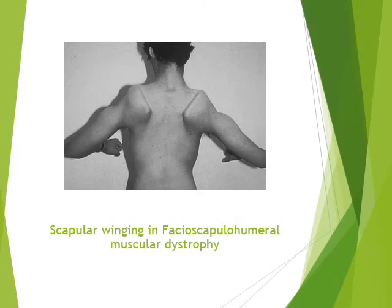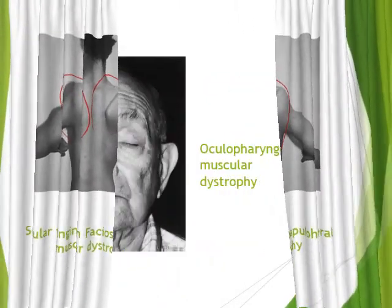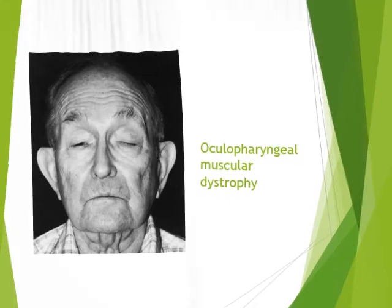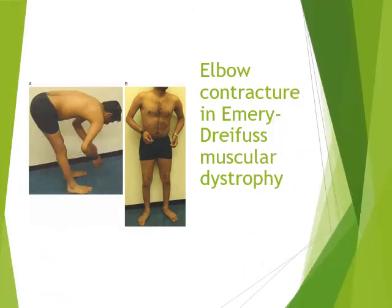Facioscapulohumeral muscular dystrophy is characterized by scapular winging. Oculopharyngeal muscular dystrophy in French Canadians causes dysphagia and ocular weakness. Emery-Dreifuss is characterized by elbow contractures and cardiac conduction abnormality — these cases should be screened for cardiac anomalies.